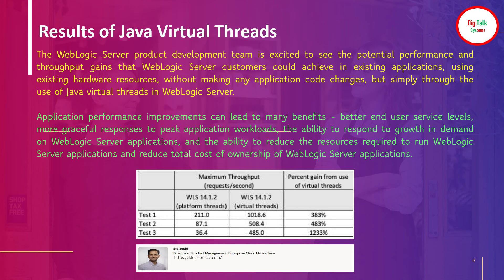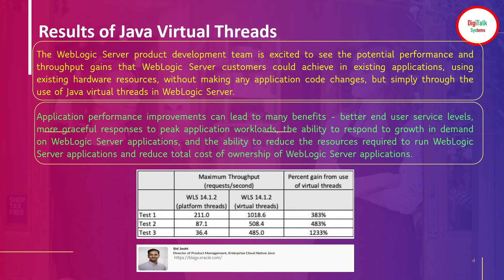We can see how significantly the performance of your application is going to be increased. Along with that, it is going to save costs as well. Currently, if you need more concurrency, you have to buy more CPU sockets, cores, and threads. With this virtual thread model, you will save costs because each physical thread will now have multiple JVM virtual threads, so you don't need to increase OS capacity in terms of cores, CPUs, and sockets.